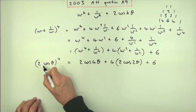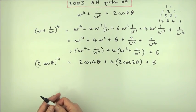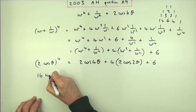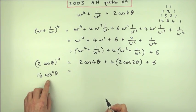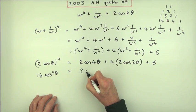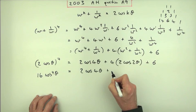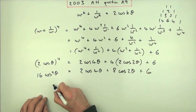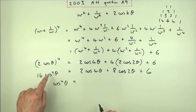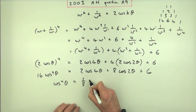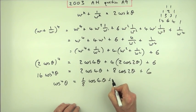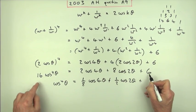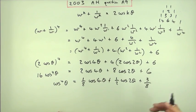2 to the power 4 is 16. So 16 cos^4 θ = 2 cos(4θ) + 8 cos(2θ) + 6. Finally divide by 16: cos^4 θ = (1/8) cos(4θ) + (1/2) cos(2θ) + 3/8.